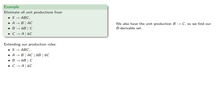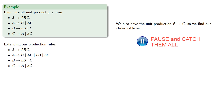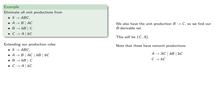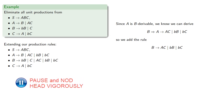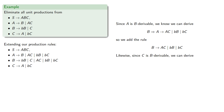Note that we also have the unit production B produces C, so we find our B derivable set, which is C and A. Note the non-unit productions available. Since A is B derivable, we can derive B produces A and then A produces one of these, so we add three rules B produces those. Likewise, since C is B derivable, B eventually gets to C which takes us to BC, so we add the rule B produces BC.